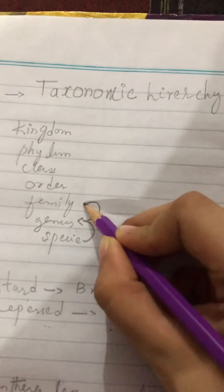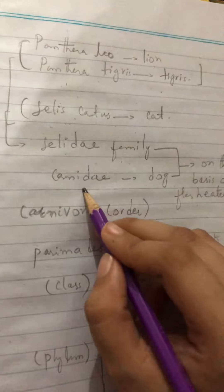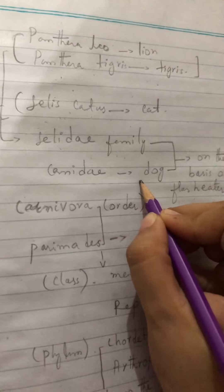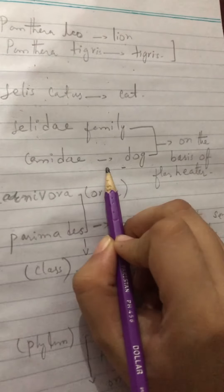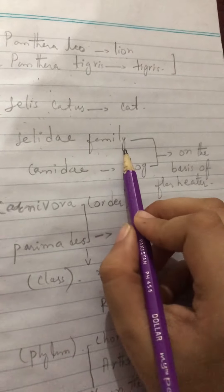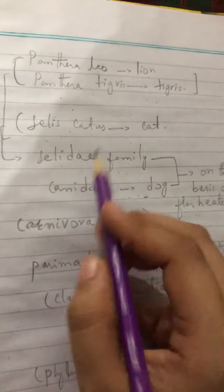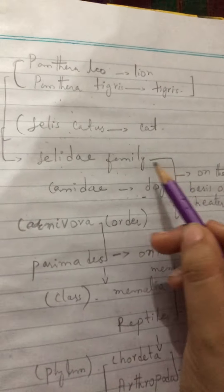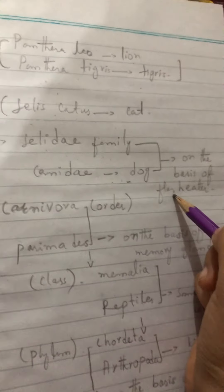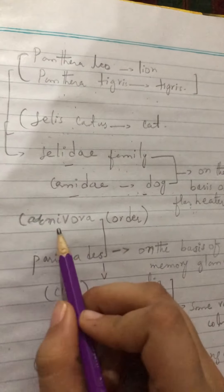The Felidae family includes cat, lion, and tiger. Now, Canidae is the family of dog. We classify the Felidae family and Canidae together on the basis of being flesh-eaters. Since cat, lion, tiger, and dog are all flesh-eaters, they are grouped in the same order — Carnivora.